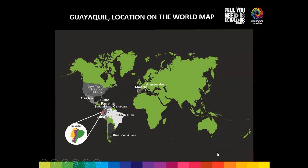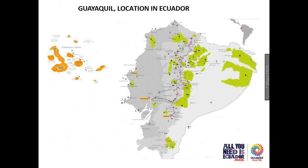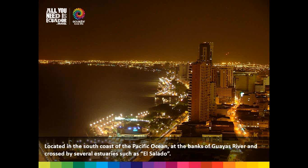To find Guayaquil, we go to the lowlands, right down to sea level. Unlike Quito in the highlands, with the Andes running through the middle of the country, Guayaquil is located bordering the Pacific Ocean at sea level. It has an international airport, making it always a gateway to the rest of Ecuador — not only Quito has an airport, but Guayaquil as well.